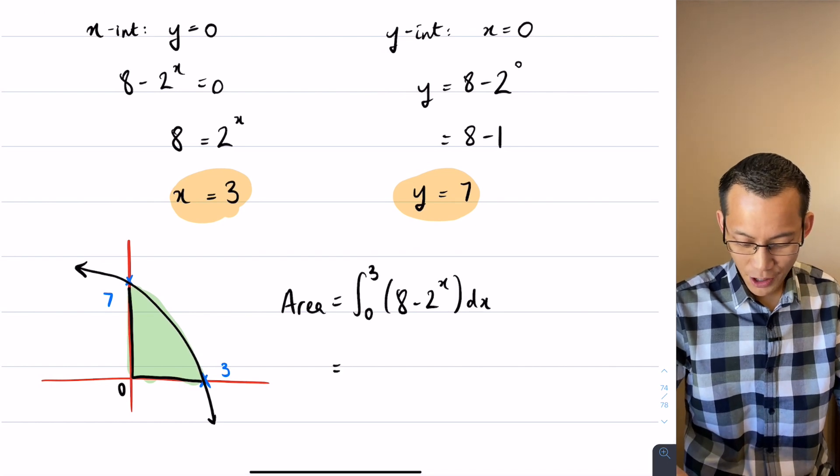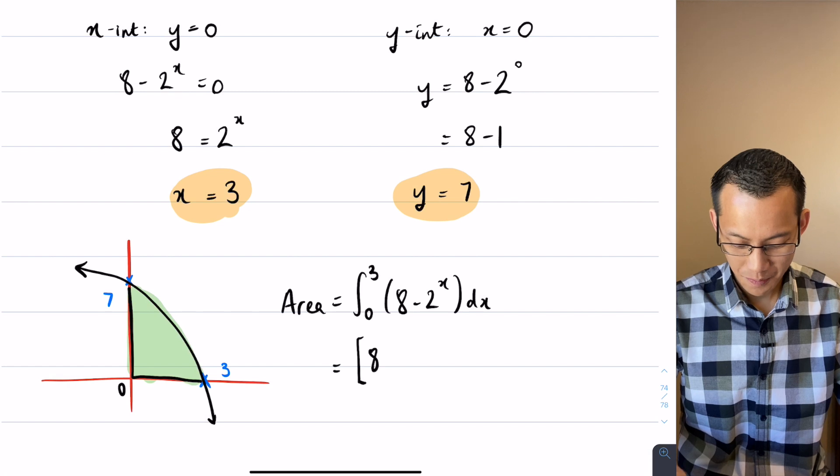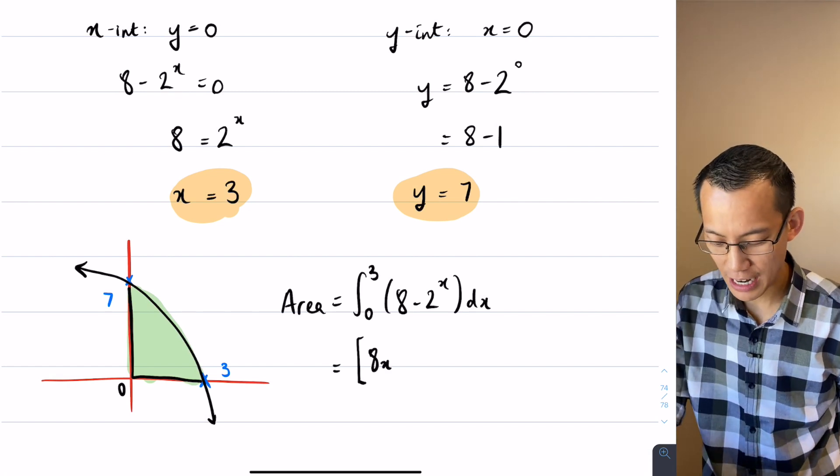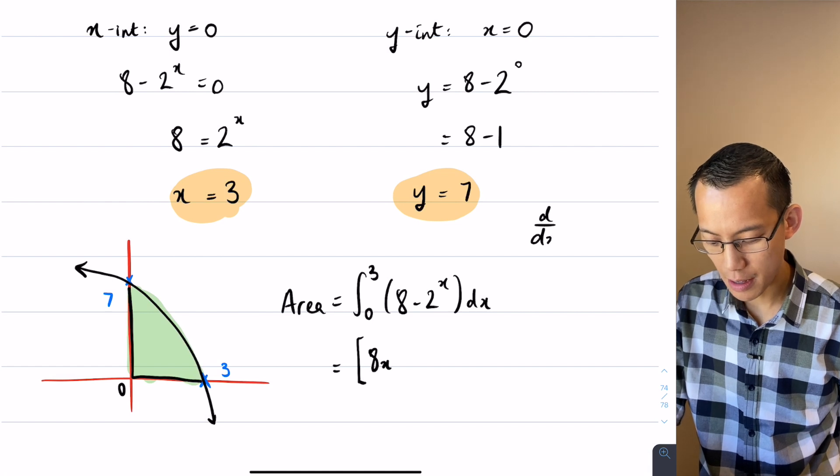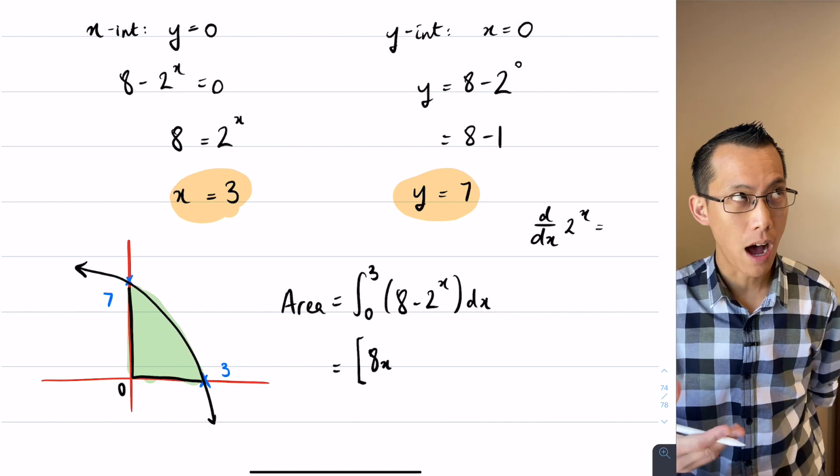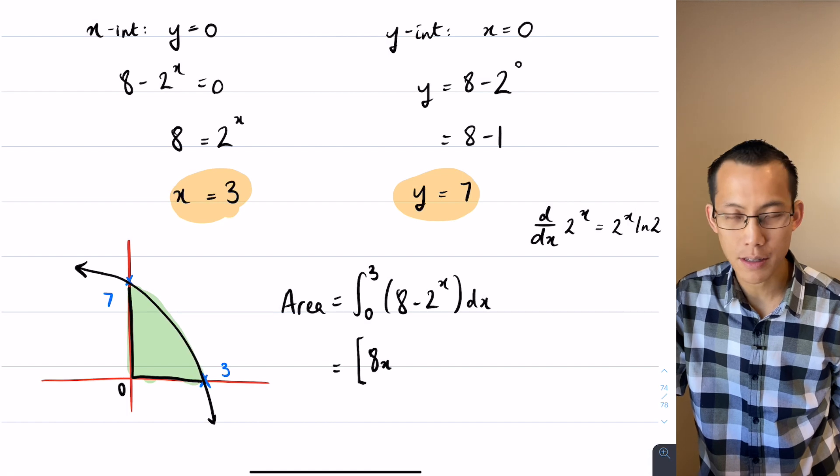Okay, now I'm going to go to my primitive now. The 8 just integrates up into 8x. Now this 2 to the x, you have to be careful. When we were differentiating things like 2 to the x, so exponentials with bases other than e, one of the results that we proved was that it would be equal to this.